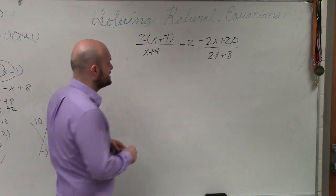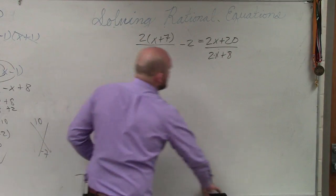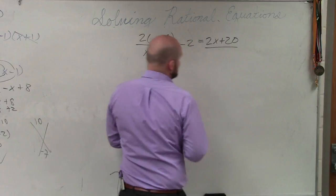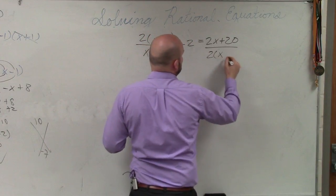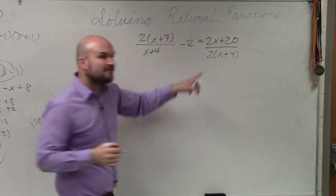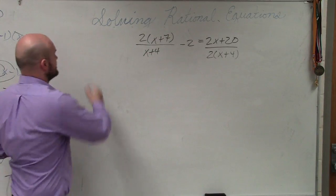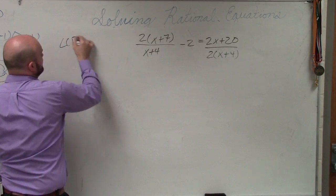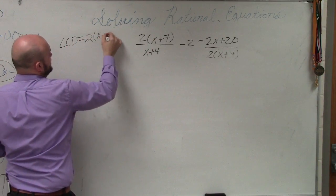In here, we can factor 2x+8. If I factor 2x+8, I can get that as 2(x+4). Therefore, the LCD in this case, the LCD of this problem, is 2(x+4).